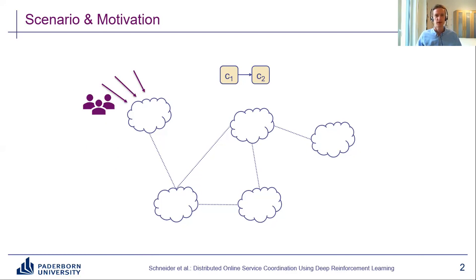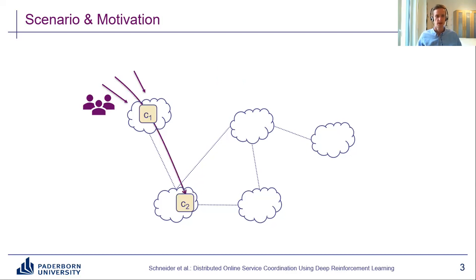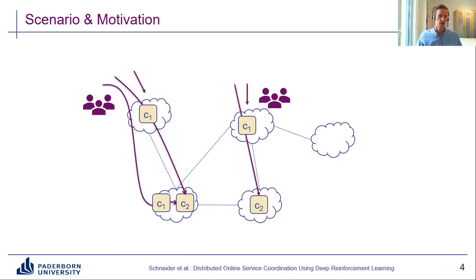In order to provide these services to our users, we need to scale the involved service components, place instances of these components at the different nodes in the network, schedule the rapidly incoming flows to these different placed instances, and route these flows through the network. For example, I might place an instance of C1 at the ingress and C2 over here. As time passes, the scenario changes — users may arrive at a new location, traffic may go up or down — and in each case I need to quickly react and adapt the scaling, placement, scheduling, and routing.